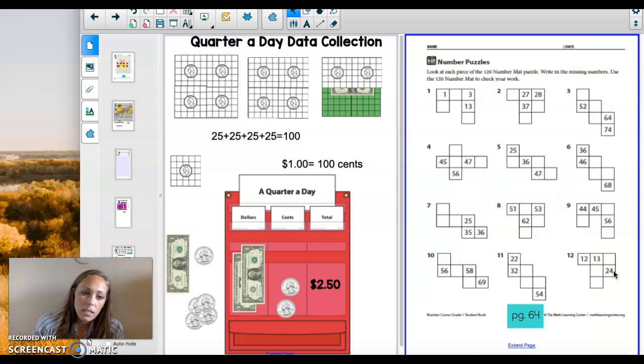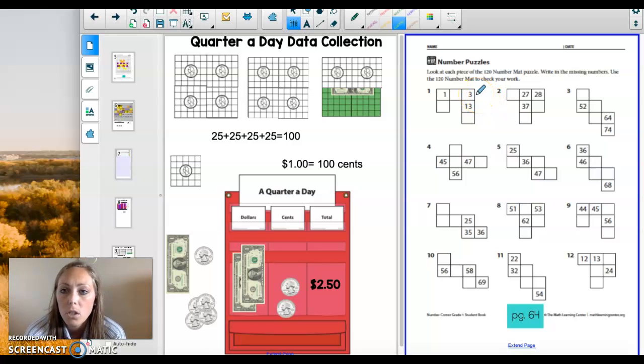The last page is a new activity. I'm going to have you guys turn to page 64 in your book. The page you've been coloring in every day has been on page 63. So just go to the next page and now we have these number puzzles. You will need to be using the 120 chart on page 63, because that will help you a lot. It says look at each piece of the 120 number mat puzzle, write in the missing numbers, use the 120 number mat to check your work. That means I want you to use your brain first and write down what you think it is first. And then when you're done, then you can go and check your work on the 120 chart.